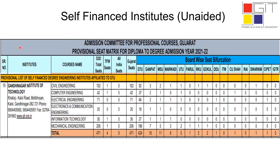Let's take one example of a self-finance (unaided) institute. I have taken the example of Gandhinagar Institute of Technology. For the Civil Engineering branch, there are 102 total D2D seats, one TFW seat, and zero all India seats. Out of these 102 Gujarat seats, in the board-wise bifurcation, 92 seats are for GTU students.